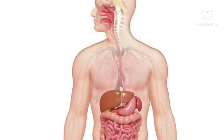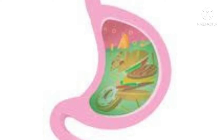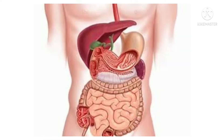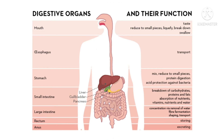The food that we eat is broken down into simpler forms. These simpler forms of food give energy that can be used by our body. The process by which food is broken down into a simpler form so that it can be easily absorbed by the body is called digestion. Various organs work together to help in digestion, and these organs together form the digestive system.